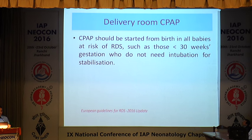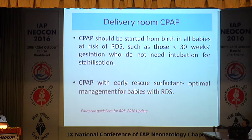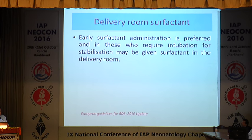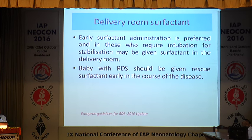CPAP should be started in the delivery room itself if the baby has respiratory distress. These are the latest NRP guidelines, which state that after resuscitation, if the baby has a significant respiratory rate and retractions indicating significant respiratory distress, we can start CPAP in the labor room itself. CPAP should be started from birth in all babies at risk of RDS, such as those with less than 30 weeks gestation, who do not need intubation for stabilization. CPAP with early rescue surfactant is now the standard of care for babies with RDS. Early surfactant administration is preferred, and in those who require intubation for stabilization, surfactant may be given in the delivery room itself, because the earlier the surfactant is given, the better the RDS outcomes.